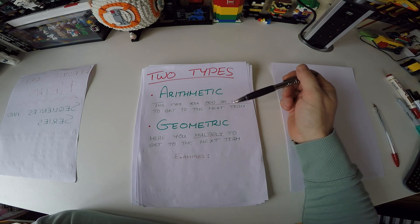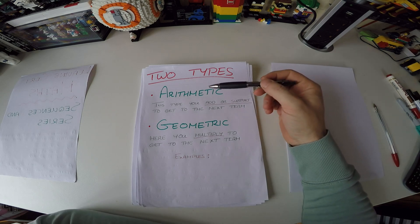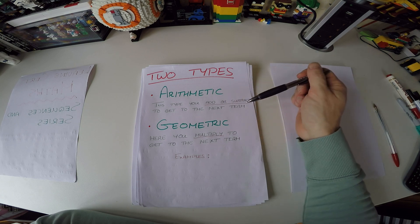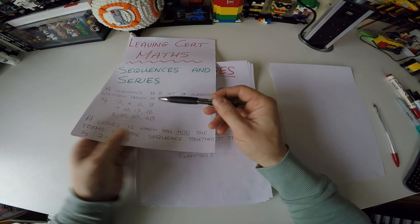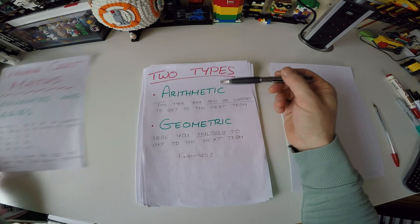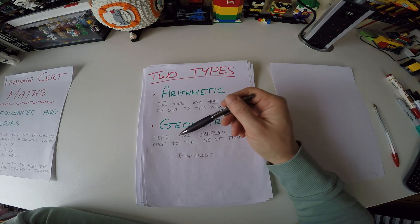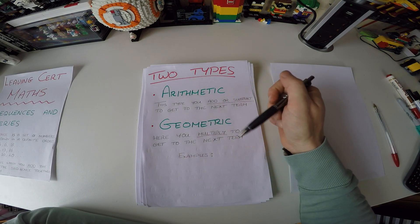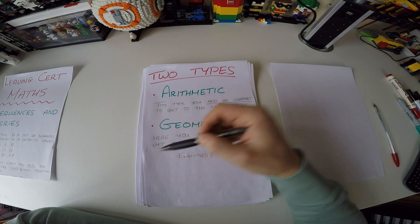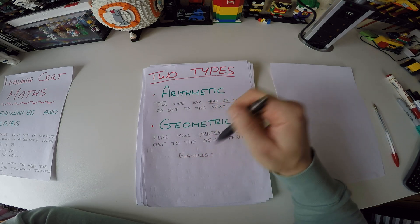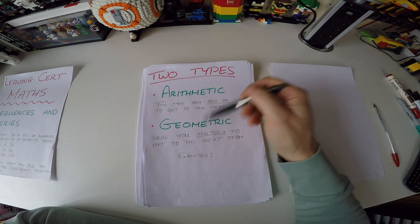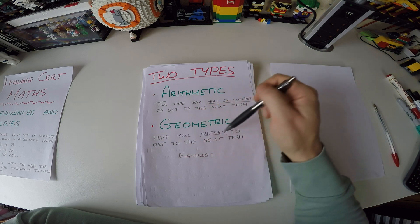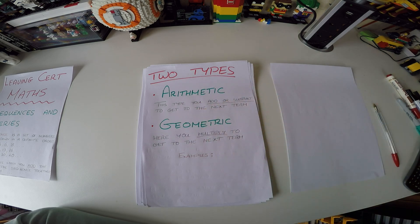There are two main types we look at for our course: arithmetic, where you add or subtract to get to the next term, and geometric, where you multiply to get to the next term. You see a lot more geometric at higher levels, and a mix of both for ordinary level, but mostly geometric at higher level.